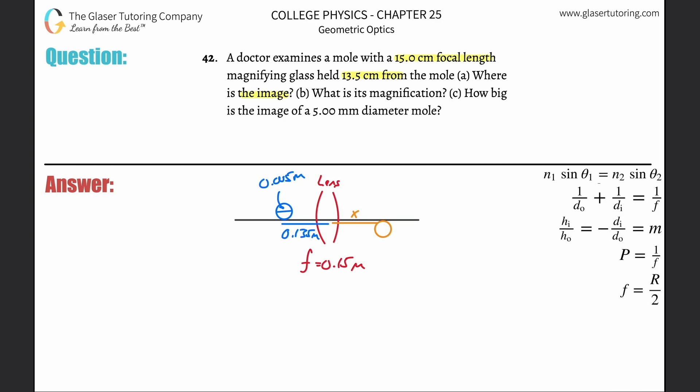It says where is the image, so when they say where they usually mean the distance of the image relative to the lens. So di is really what they're asking us to solve for. They tell us the distance that the glass is held from the mole, 13.5 centimeters, so this is the object distance or d sub o. They also tell us the focal length of the lens.